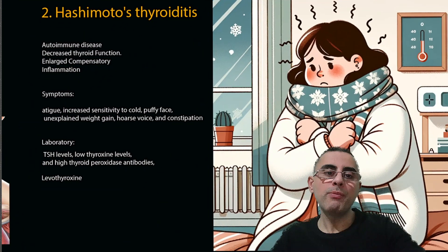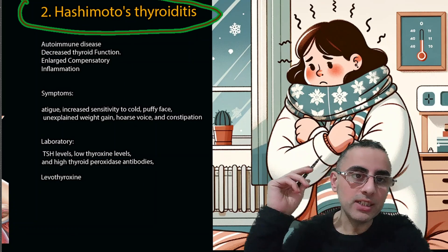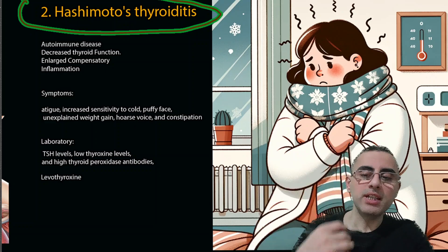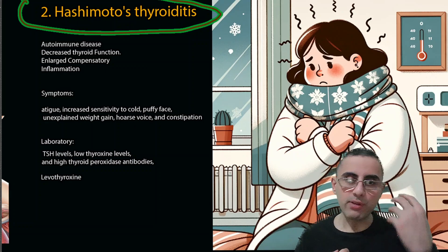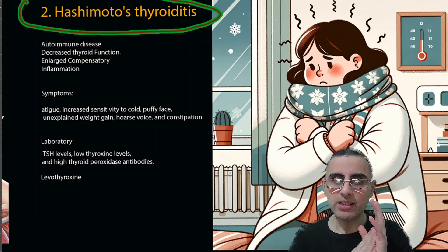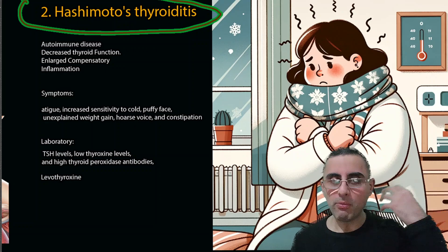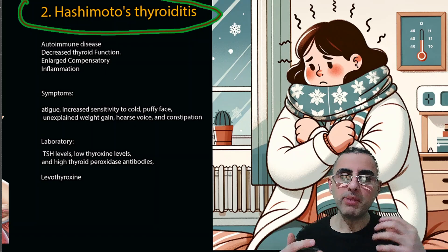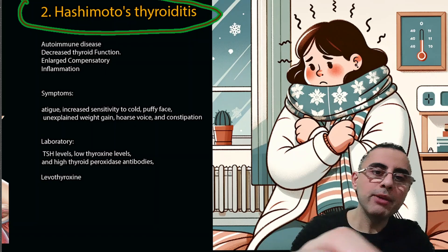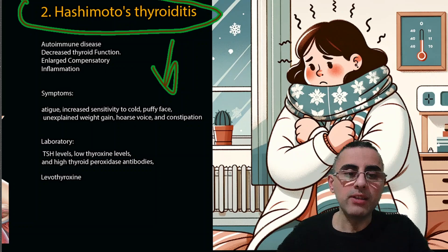The second most common cause of goiter is Hashimoto's thyroiditis, which is an autoimmune disease. The body's immune system mistakenly attacks the thyroid gland, causing inflammation and destroying thyroid cells, meaning fewer hormones are produced. The body tries to compensate by enlarging the thyroid gland to produce more hormones, but the immune system attacks it again, resulting in a deficiency of thyroid hormones despite a large thyroid gland.